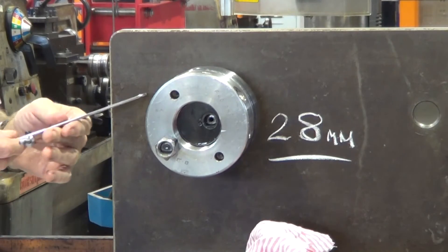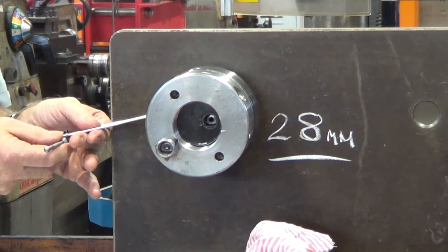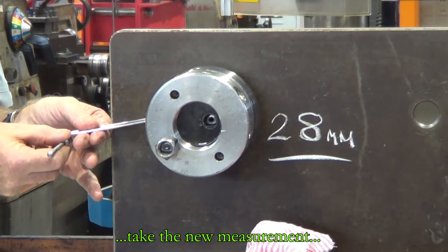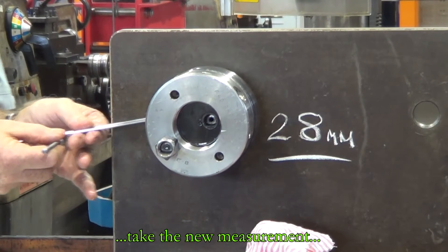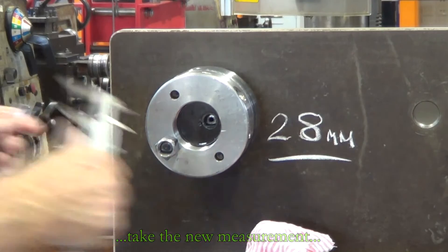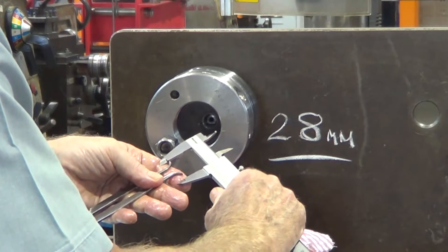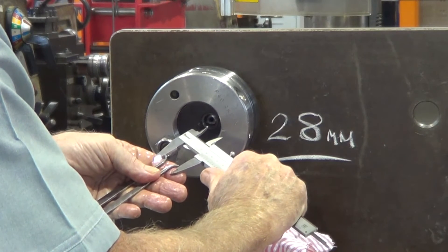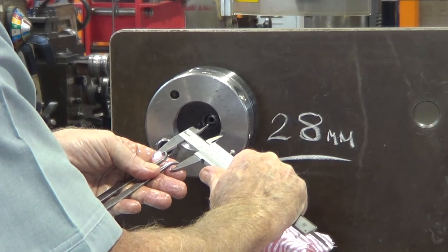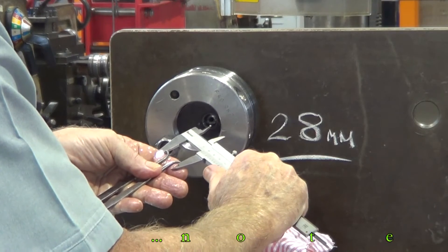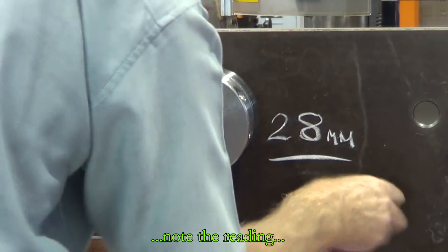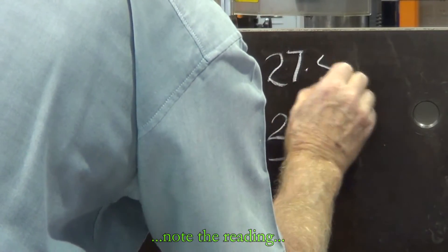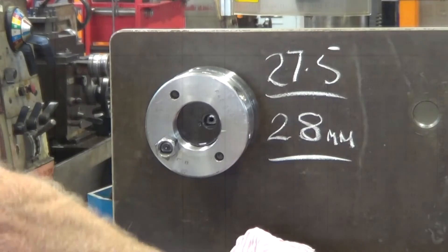Now we just take a reading of where the bearing is positioned now, write down what the new reading is. 27.5, so the bearing has moved along half a millimeter.